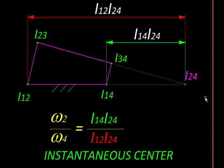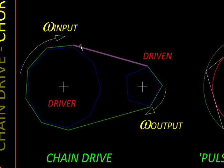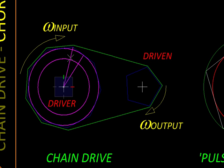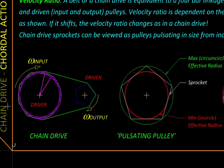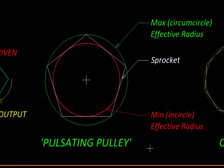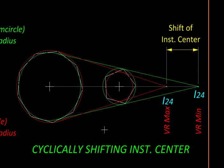Let's now move on to a chain drive. In a chain drive, instead of pulleys we have sprockets, and as the chain wraps around them, they behave like polygons. We have shown just five teeth to exaggerate their effect. As the sprocket rotates, sometimes the chain takes off from the tip of the polygon and sometimes from the side. In other words, the equivalent radius of the sprocket varies from the in-circle to the circum-circle. Therefore, a sprocket is equivalent to a pulsating pulley — a pulley whose size is continuously and cyclically fluctuating — and this happens on both sprockets.